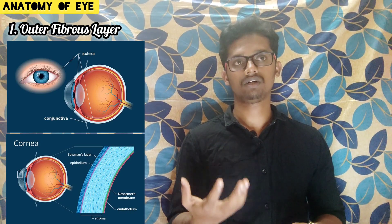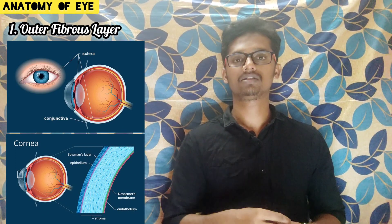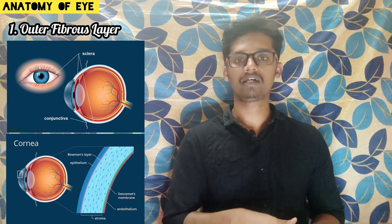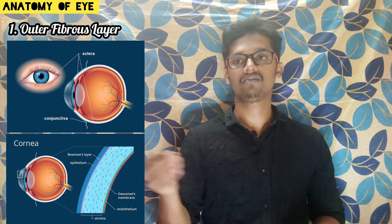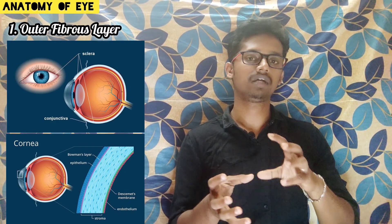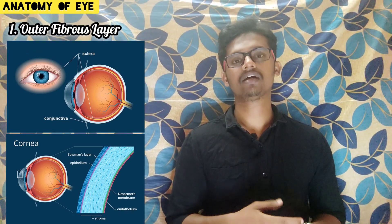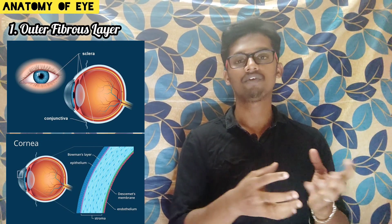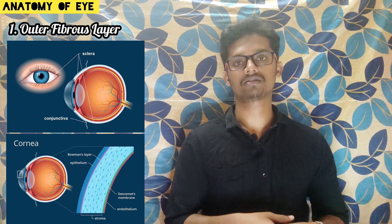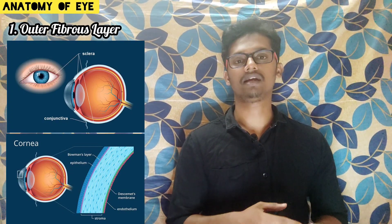So how does the cornea work without blood vessels? It receives oxygen from another way — directly from the external environment. Rather than getting oxygen from blood through blood vessels, it gets oxygen directly from the air through blinking. While blinking, the external air touches the cornea, and the oxygen present in the air gets transferred to the cornea. The muscles are connected to the scleral layer, which is why we can move our eyes left, right, superiorly, inferiorly, and in oblique positions.